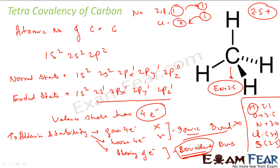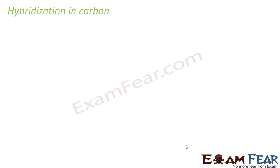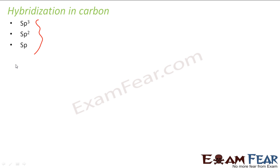So why are these covalent compounds? You can understand from the electronegativity difference — it is not that much, so they are covalent. Also, since carbon has four electrons in the valence shell, it is very difficult to gain or lose four electrons, so it will not form an ionic bond. It can share four electrons easily, forming a stable structure. Carbon shows three kinds of hybridization: sp3, sp2, and sp.